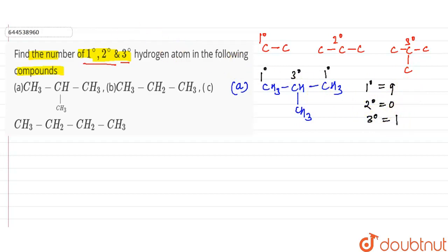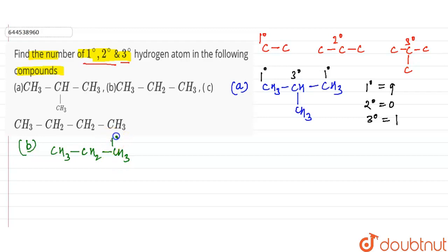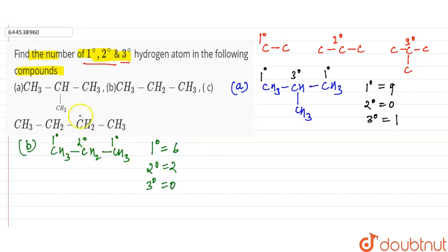In example B, the structure is CH₃-CH₂-CH₃. The two CH₃ carbons are 1-degree and the middle CH₂ carbon is 2-degree. The number of 1-degree hydrogens is 3+3 = 6, the number of 2-degree hydrogens is 2, and the number of 3-degree hydrogens is 0 because no 3-degree carbon is present in this compound.